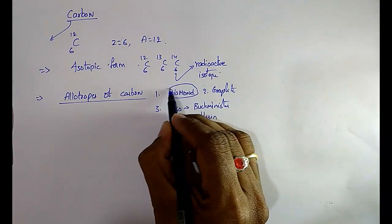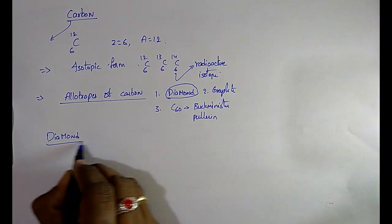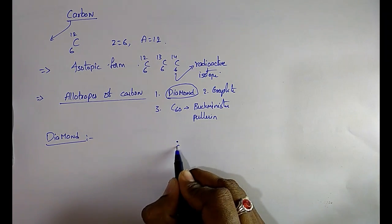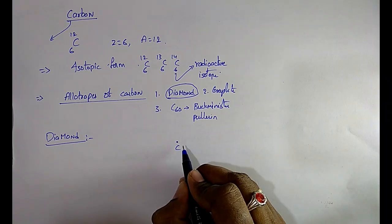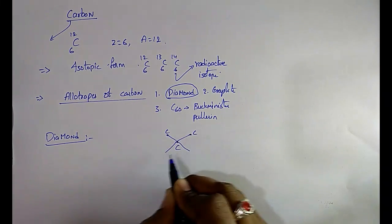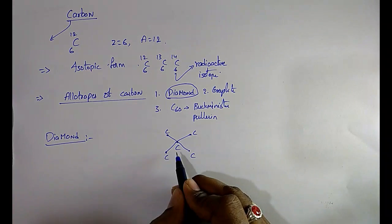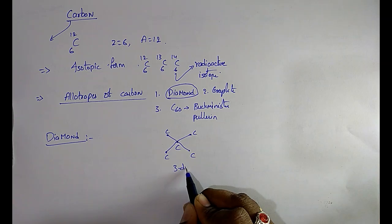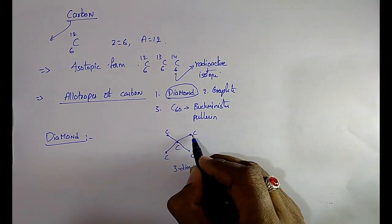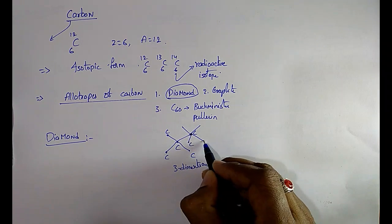First, let us discuss diamond. In diamond, each carbon atom is bonded to four other carbon atoms, forming a rigid three-dimensional structure.